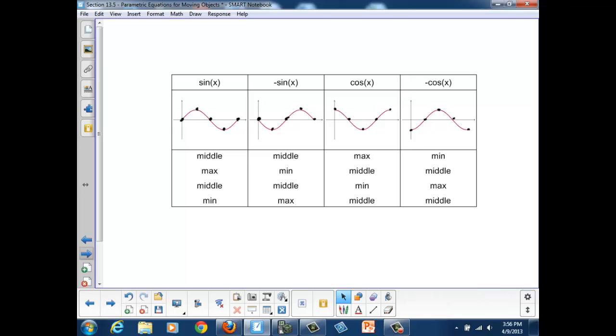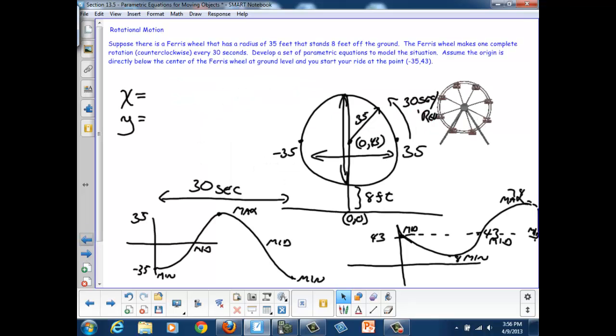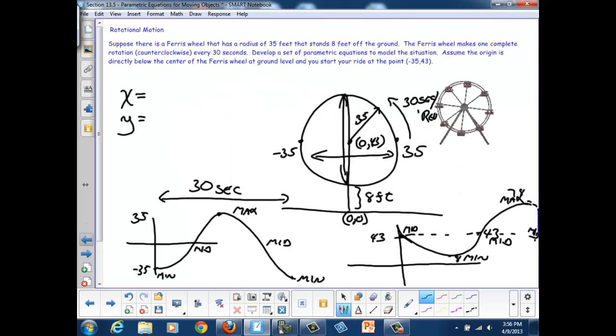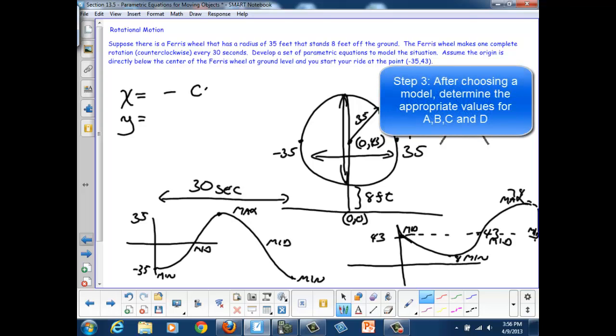So, if we look at those, and go back to our horizontal motion, started at a min, and then rose to a midpoint. That's our negative cosine graph. So that's going to be our starting point for our horizontal description, or model. So we're going to use a negative cosine to describe the sinusoid that we've sketched out here.